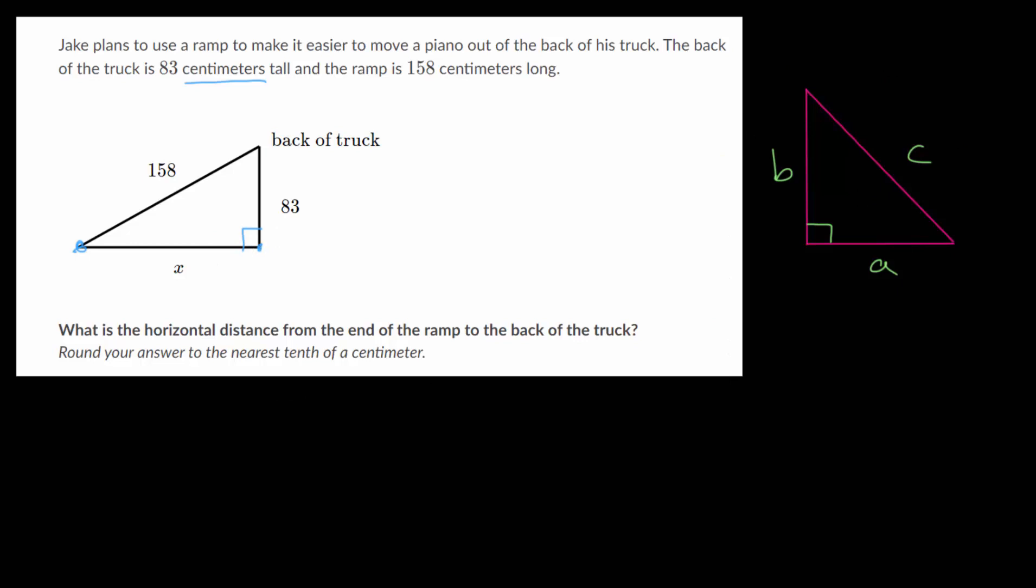So remember for some general right triangle that the Pythagorean theorem just relates the side lengths. When you square each of the legs, a and b, and you add them together, you get the hypotenuse c of this triangle squared. And the hypotenuse is always opposite the right angle.